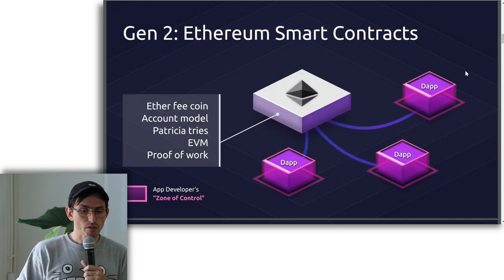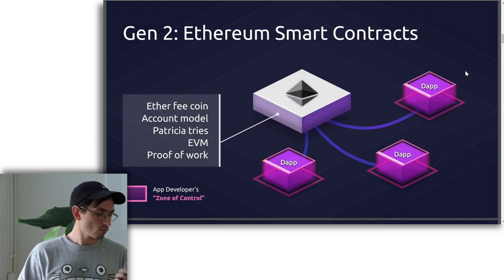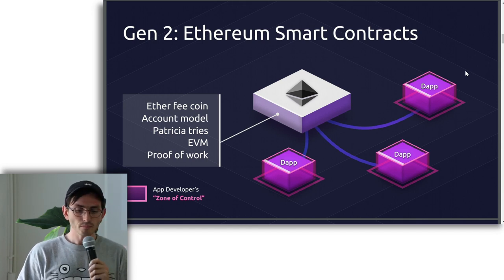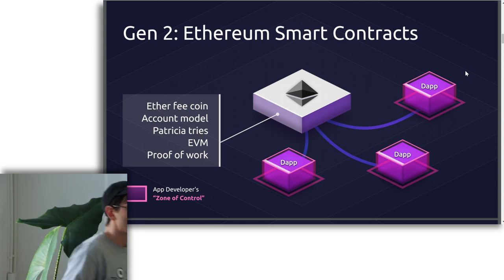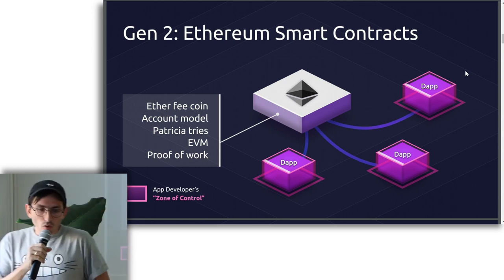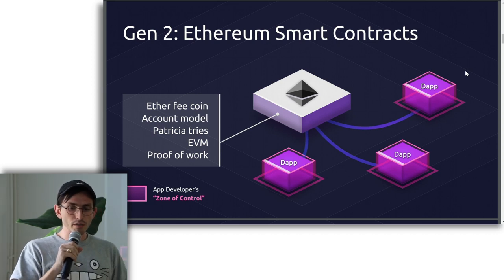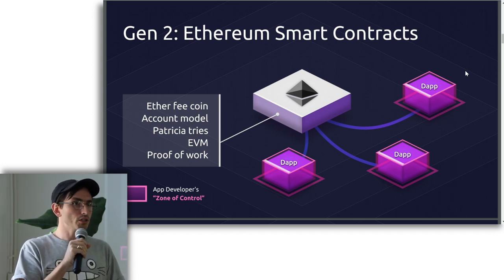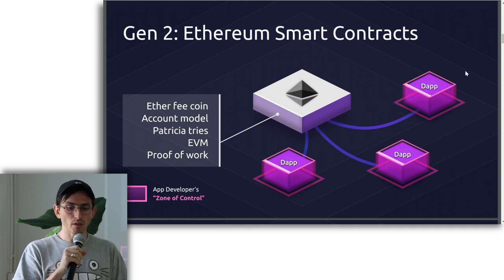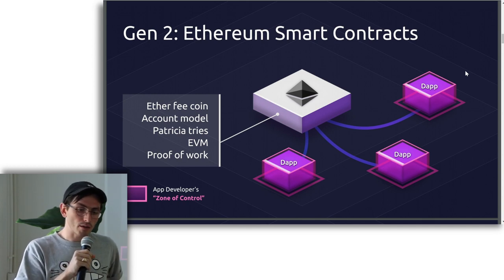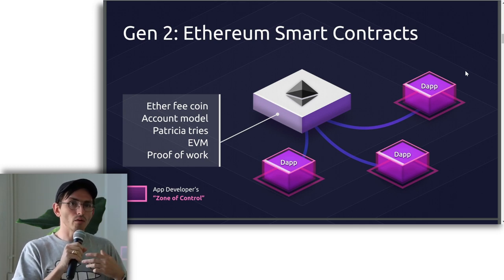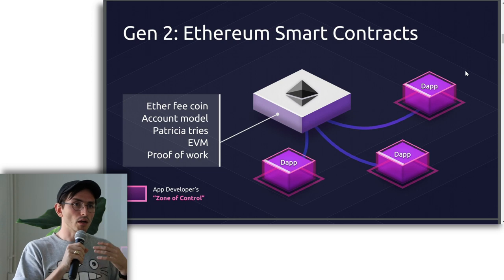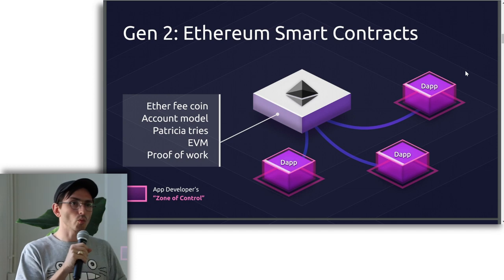Luckily, we saw the emergence of Ethereum and smart contracts, where you had a lot more freedom to sort of design your application. As you're all aware of how Ethereum works, you have this amazing ability to write custom logic inside these smart contracts — a generalizable state machine, Turing Complete — which let app designers design their apps and not worry about networking or consensus, benefit from the shared state of Ethereum, and focus on what your app actually wants to do.